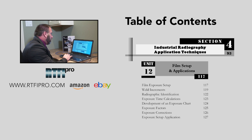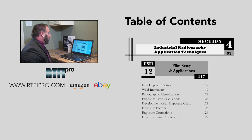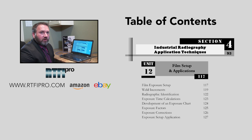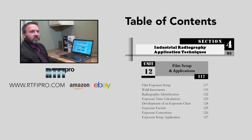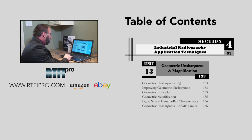Unit twelve covers film setup and application: film exposure setup, weld increments, radiographic identification, exposure time calculation, development exposure chart, exposure factors, exposure corrections, and exposure setup applications. For weld increments, I created a table breaking down each pipe size from two inch up to 36 inch, covering all thicknesses from standard up to 160 double extra heavy, showing required increments and number of exposures in both inches and centimeters — two tables total.